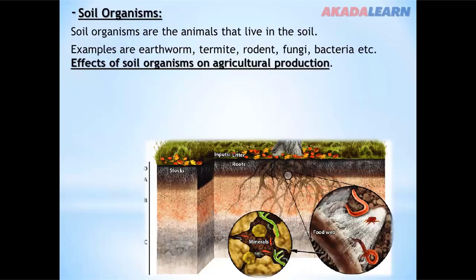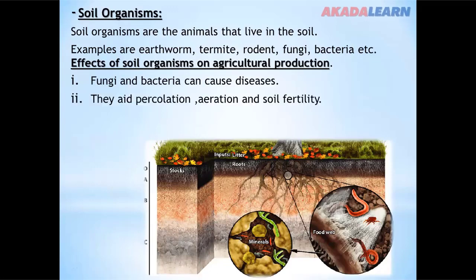Soil organisms are the animals that live in the soil. Examples are earthworms, termites, rodents, fungi, bacteria, etc. The effects of soil organisms on agricultural production include: fungi and bacteria can cause diseases, and they aid percolation, aeration, and soil fertility.